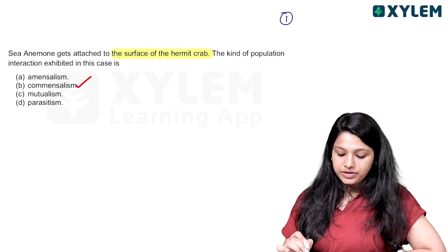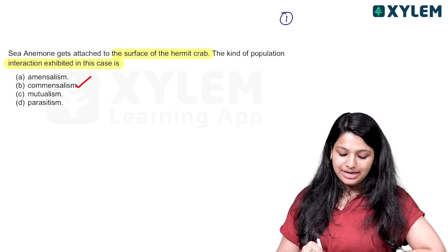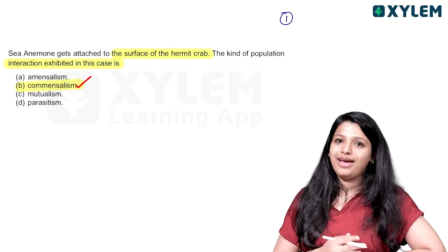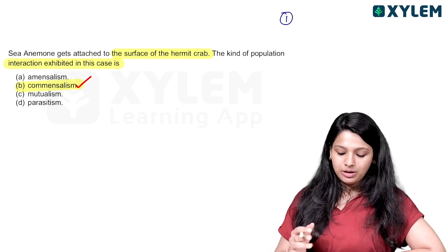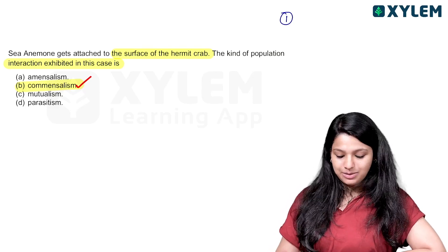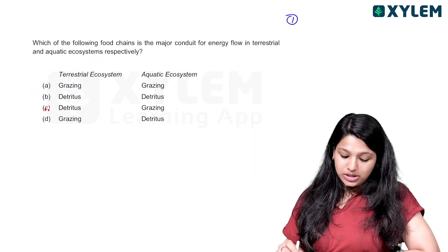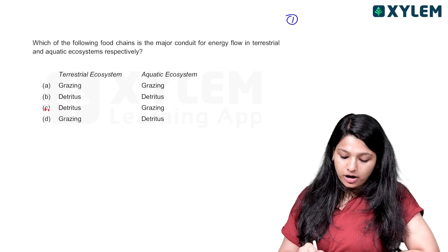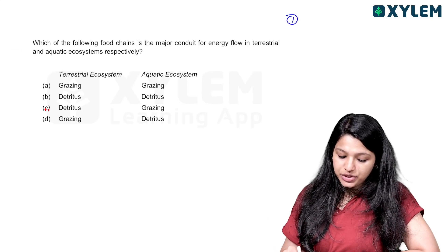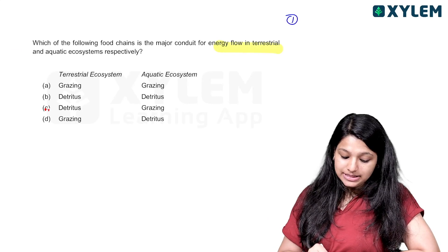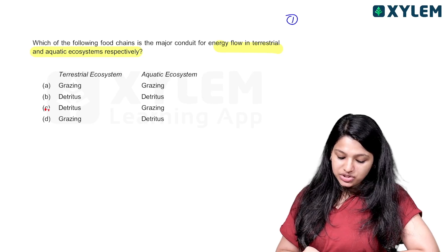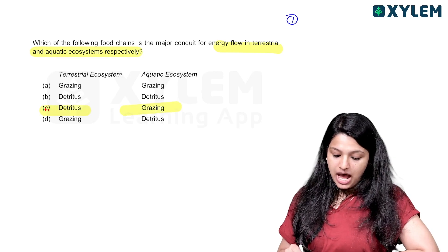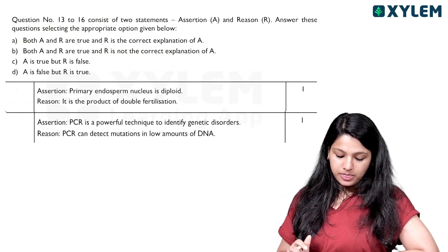CNM attached to the surface of a hermit crab represents commensalism as the kind of population interaction. For food chain energy flow: in the terrestrial ecosystem, the detritus food chain is the major conduit of energy; in the aquatic ecosystem, the grazing food chain is the major conduit of energy.